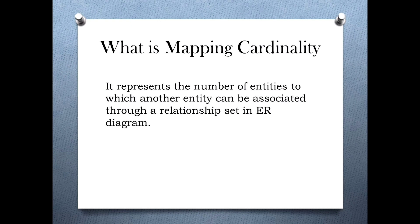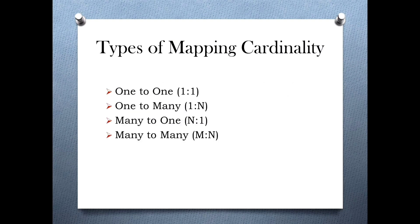The types and examples shown in this video are based on binary relationships. There are 4 types of Mapping Cardinality: one to one, one to many, many to one, and many to many. Let's discuss these types one by one.